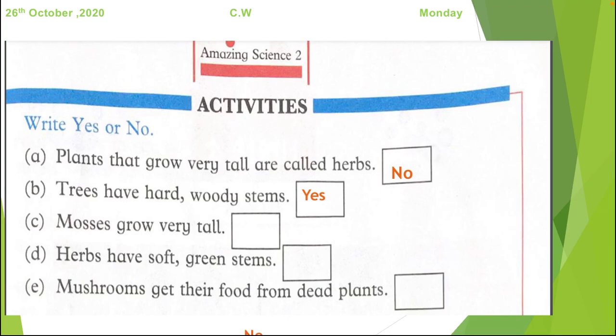Mosses grow very tall. What are mosses? They are like green velvet carpet on the moon. So how can they grow tall? No. I don't think this statement is correct. What do you think? Let's see. Yes. This statement is not correct.